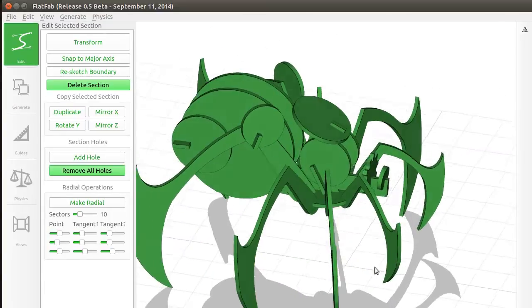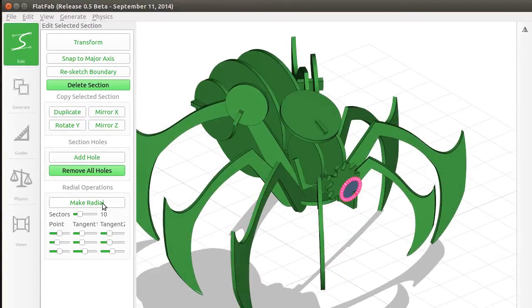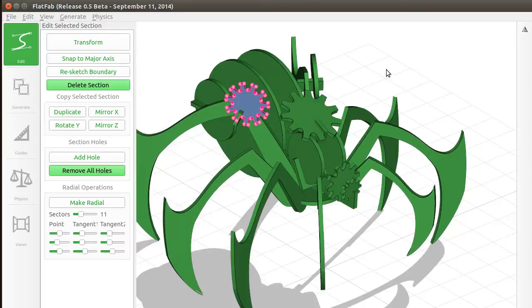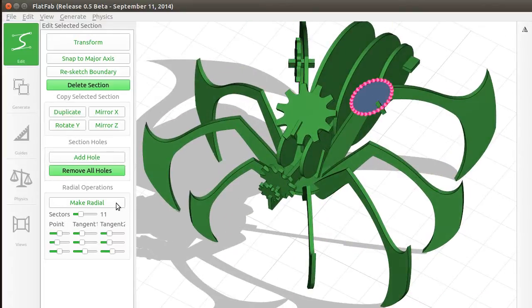Radial operations modify the shape of a contour. Circles, stars, gear shapes, and other contour shapes can be defined using this operation. Radial arrangements of holes for a section can also be generated.